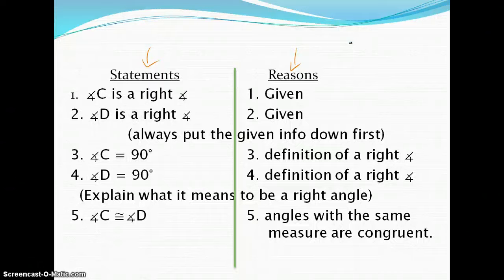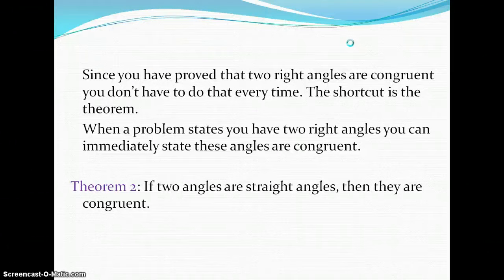From there, we can see that 90 is equal to 90. Going off of our previous idea of congruent, we can say that angle C is congruent to angle D because angles of the same measure are congruent. Therefore, our shortcut, we can now say that two right angles are congruent. We don't have to prove that every time, so we can just use that shortcut as we see fit.